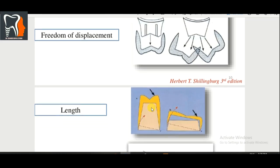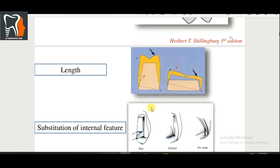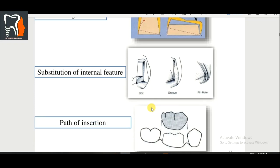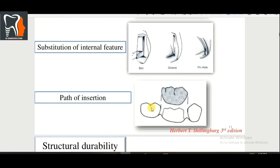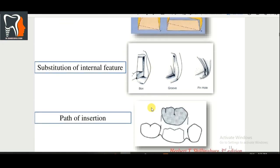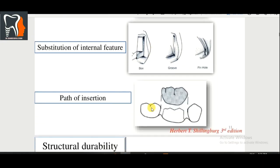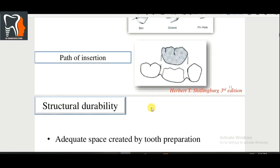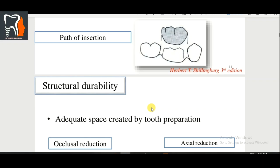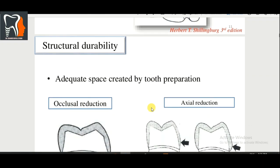We also talk about substitution of internal features such as box, groove, and pinhole. For structural durability, adequate space must be created by tooth preparation. Both occlusal reduction and axial reduction are important to ensure there is sufficient room for the restorative material.